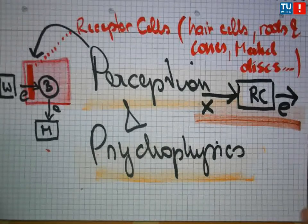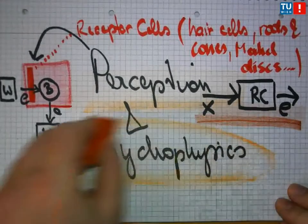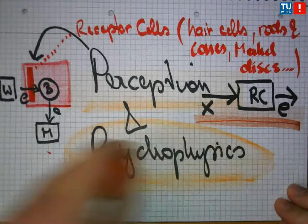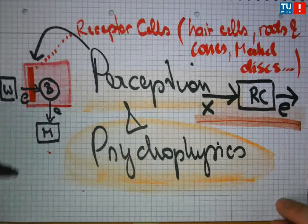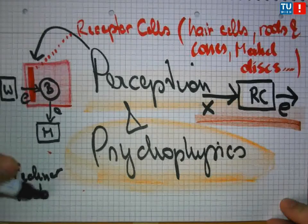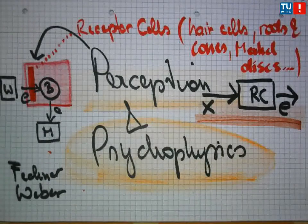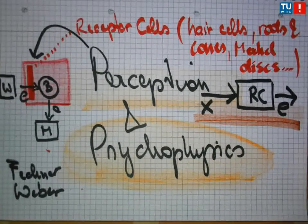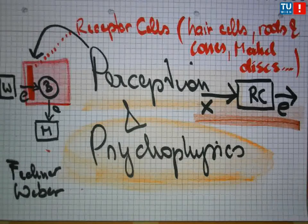These early stages of processing are investigated and described in the science of psychophysics. The fundamental idea started out in the 19th century with two German scientists, Fechner and Weber, both involved in the emerging optical industry—like Newton and Spinoza before them—who started to wonder why what we perceive as human beings is apparently not what is happening in our physical environment.